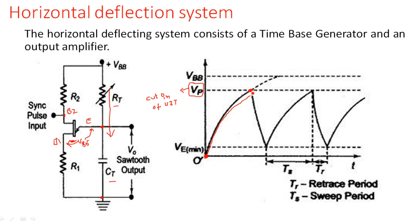When the voltage across the capacitor reaches Vp, the transistor immediately comes into the ON state. If the transistor did not switch ON, the capacitor would charge up to Vbb (the supply voltage). But when the transistor turns ON, the capacitor discharges through resistor R1. So the charging path is Rt-Ct and the discharging path is R1-Ct. When it reaches Vp, it immediately discharges, but it does not go completely to zero — a minimum emitter voltage Ve remains, at which point the transistor turns OFF and the capacitor charges again.